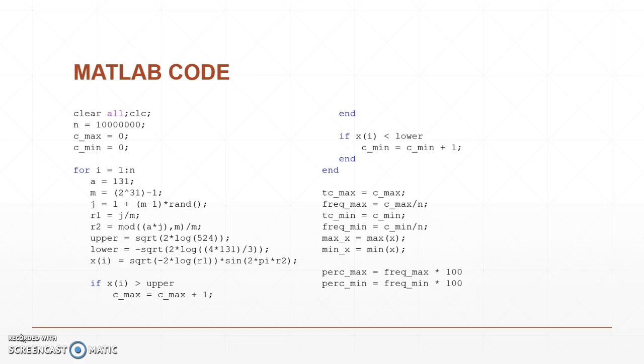...if x sub i is greater than that 3.54, then I want you to count it as a count max, so c_max. And then go into the next if loop and say, well, if x sub i is lower, in other words...